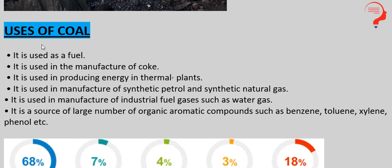What are the uses of coal? It is used as a fuel — coal ko fuel ki tarah use kiya jaata hai, jalane mein. It is used in the manufacture of coke. It is used in producing energy in thermal plants — coal se aag laga kar energy produce ki jaati hai thermal plants mein.